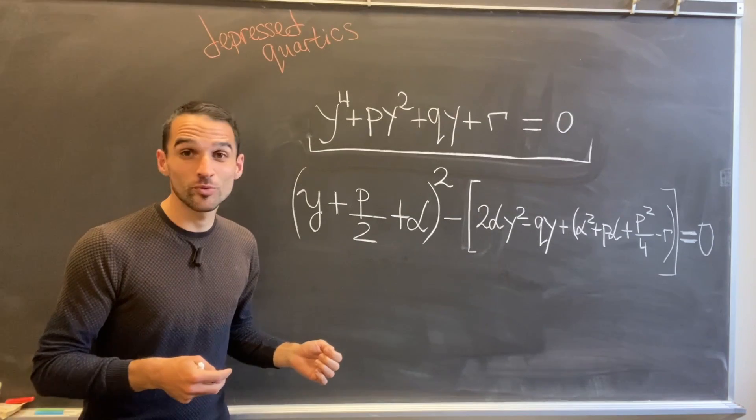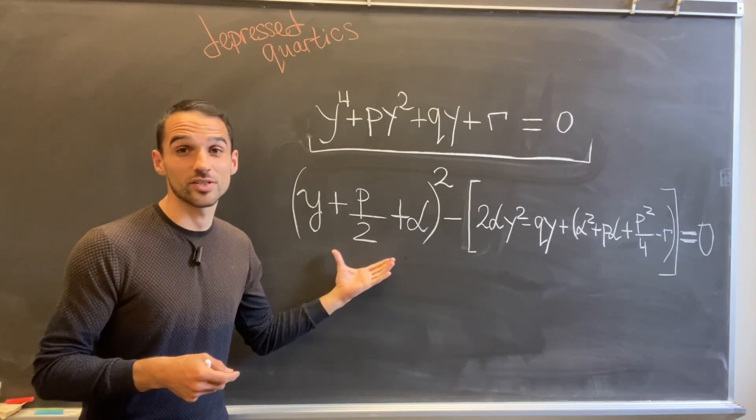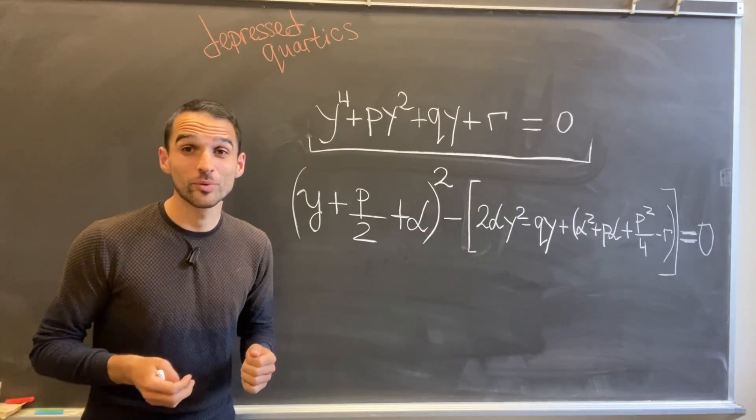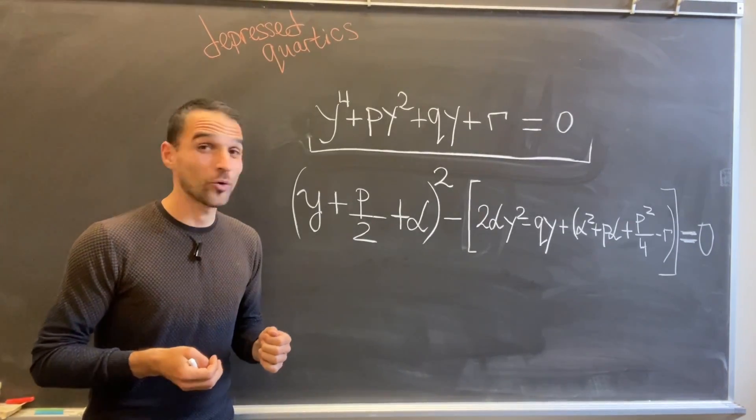So that we get a difference of two perfect squares—this would be enough for us because we will get the difference of these two expressions times their sum. So in this way, we will just need to solve two separate quadratic equations.